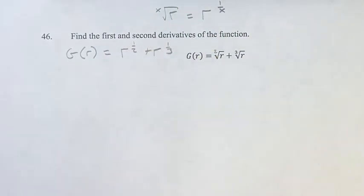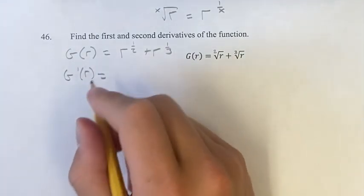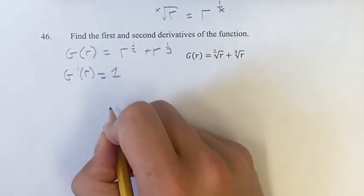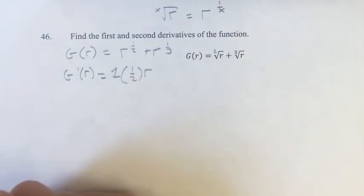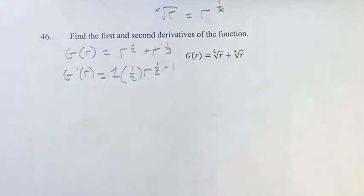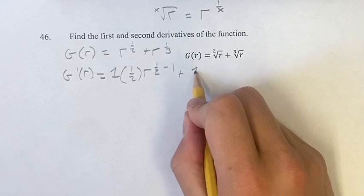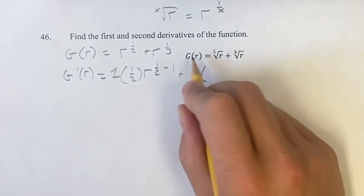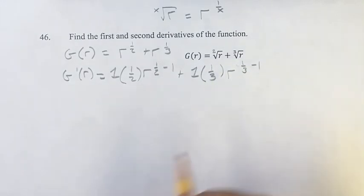Now these are two power functions, and we can find the derivative. So g prime of r is equal to, the coefficient of this term is just 1, times the exponent is 1 half, put our variable in there, and our new exponent is going to be the old one minus 1. Same thing with the next term, coefficient is still 1, times our exponent, 1 third, and the old exponent, 1 third, minus 1.